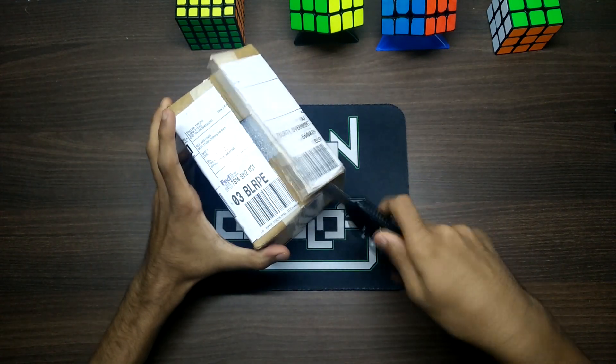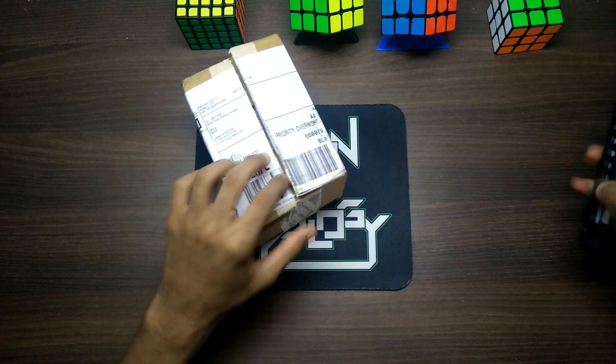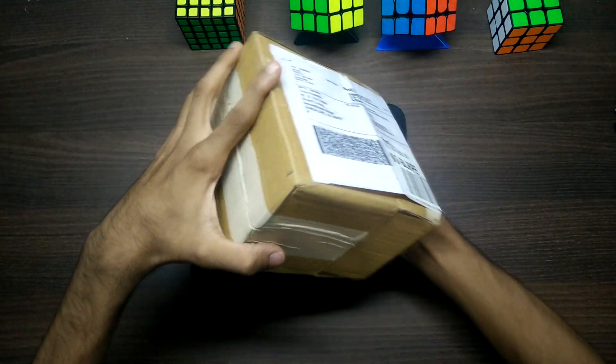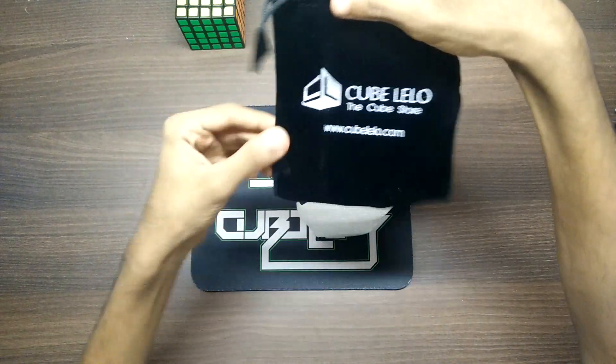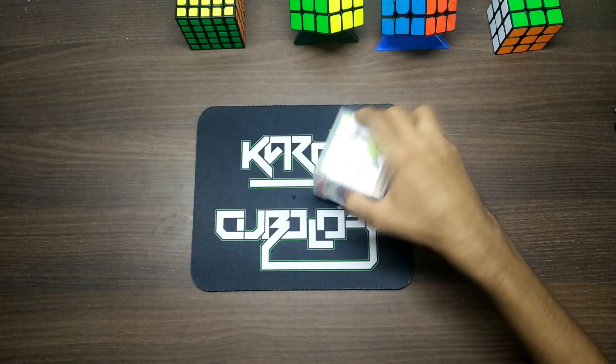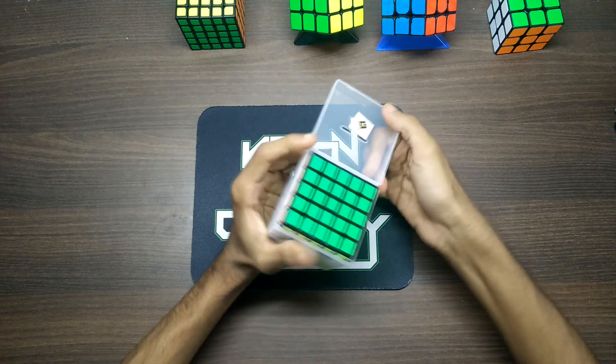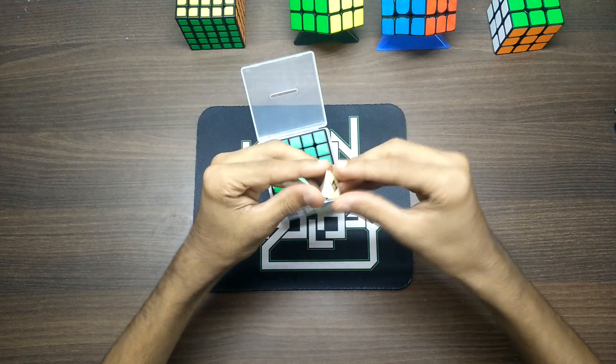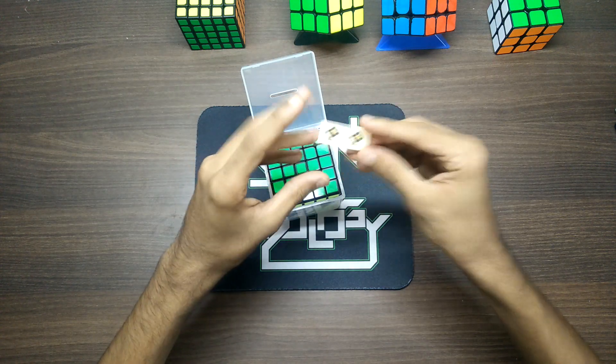The packaging seems to be pretty solid here. So you get a pouch from Cube Level, and this is a pretty nice plastic box. Okay, so we got stickers here from Cube Level. That's a logo I guess, that's nice.